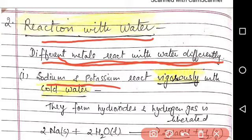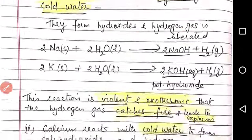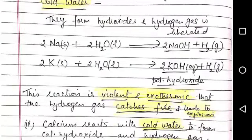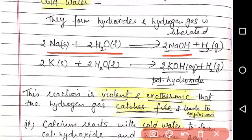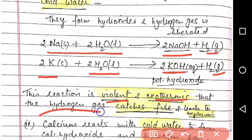Sodium and potassium react vigorously with cold water only. They form corresponding hydroxides and hydrogen gas is liberated. The reactions are 2Na + 2H2O gives 2NaOH + H2. Similarly, 2K + 2H2O gives 2KOH + H2. The reaction is very violent and exothermic that the hydrogen gas catches fire and leads to explosion.